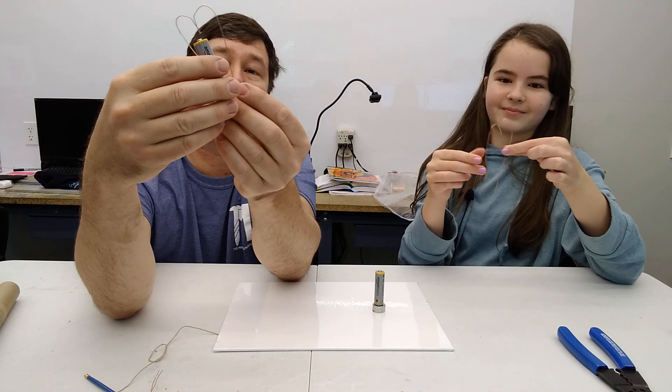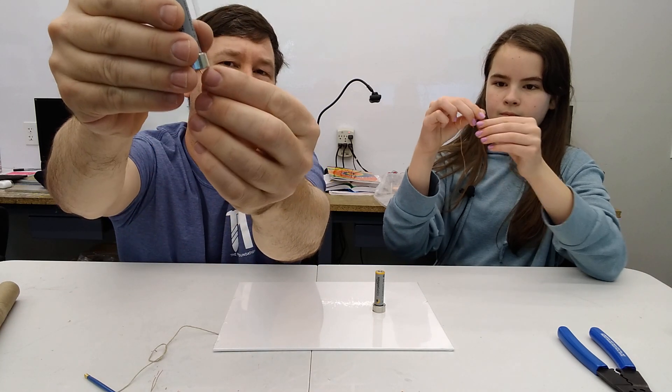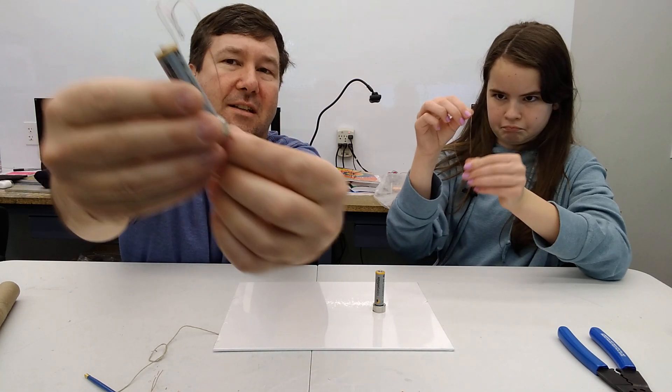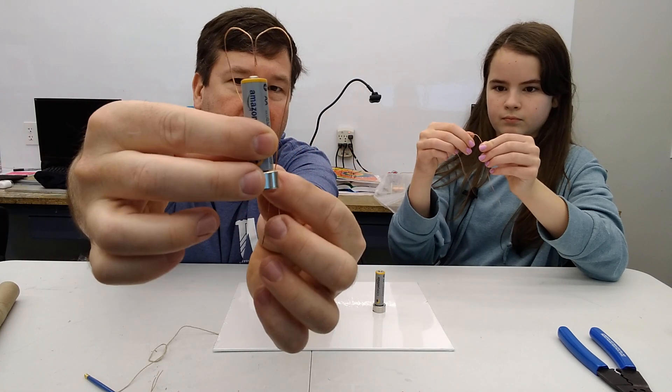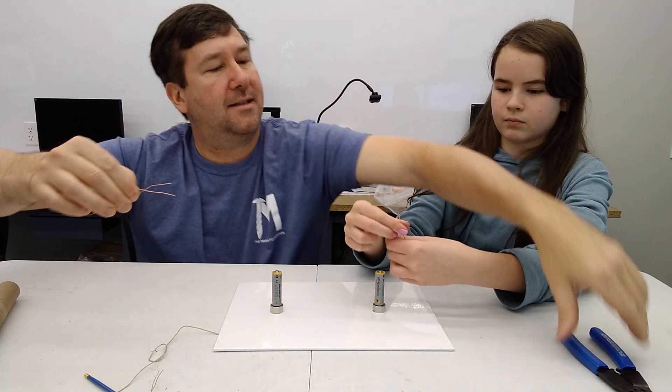So now we're going to put our magnet on it. We want to lay it right on the top of it and figure out our length. We just want just a little bit shorter than our magnet, and we'll cut that.